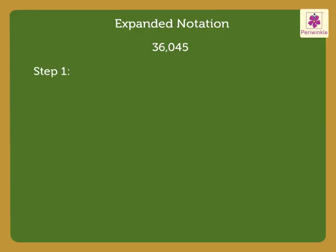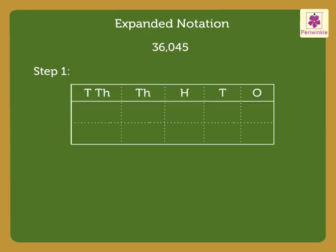Step 1. We write the number 36,045 in the place value chart as 3 in the ten thousands place, 6 in the thousands place, 0 in the hundreds place, 4 in the tens place, and lastly, 5 in the ones place.